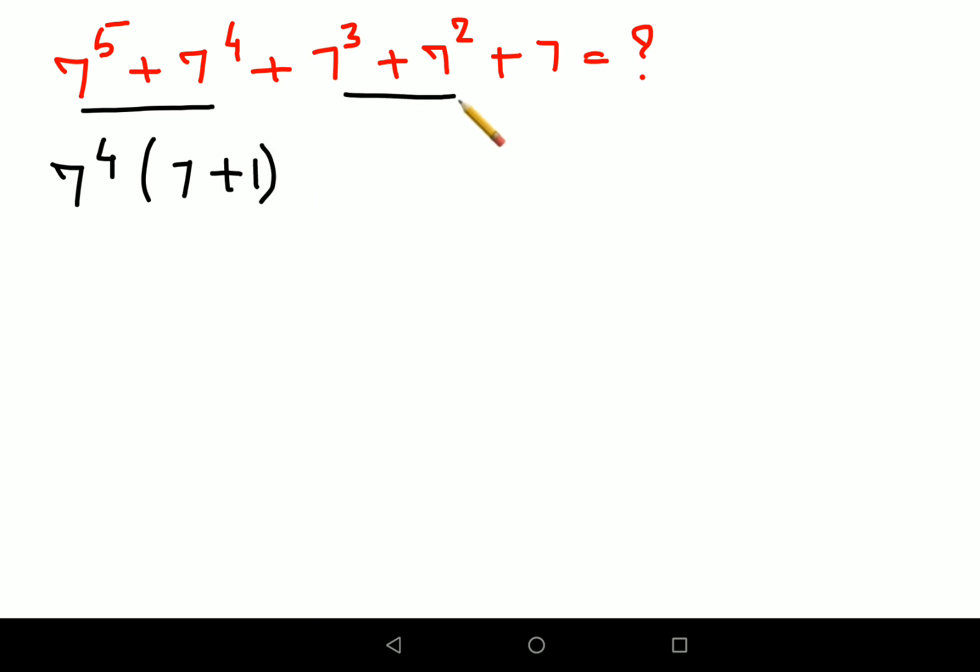Similarly between these two I can take 7 square common. So here also when I take 7 square out of 7 raised to 3 I am left with 7 plus 1, and I will keep the last 7 as it is.